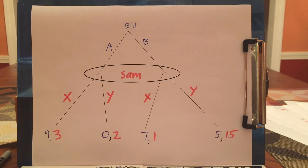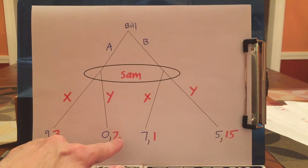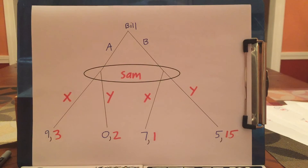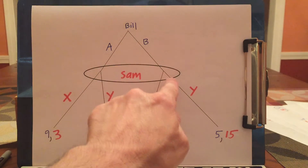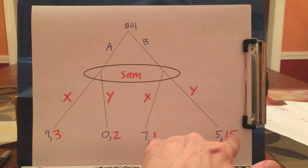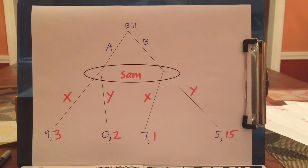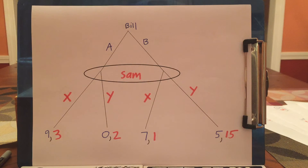Sam can't observe if he's on the left or the right. If he were on the left, he would rather pick X than Y because 3 is greater than 2. If Sam knew he was on the right, he'd rather have Y over X because 15 is greater than 1. So Sam doesn't have a dominant strategy because he doesn't know what he wants to do until he figures out what Bill has done.